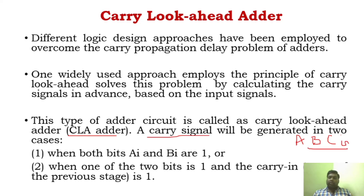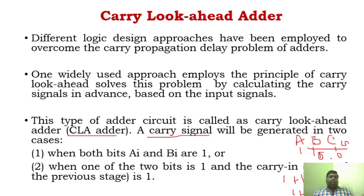For carry to be generated, either A and B both have to be one, or one of the inputs has to be one and the carry-in has to be one. Out of three inputs, if two are one, you will definitely get a carry — for example, 1 + 1 + 0 gives carry out. Even if all three are one, you get a carry. So the carry is generated when both Ai and Bi are one, or when one of the two inputs is one and carry-in is one.